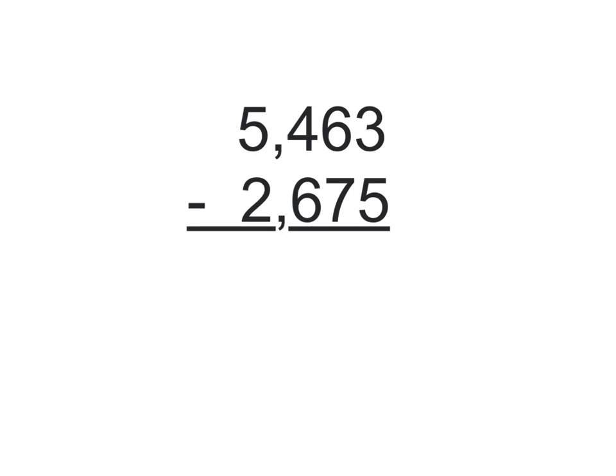So in this case, I know that I'm already going to need to ungroup from looking at my two numbers, and so I'm going to ungroup all at once just to get it out of the way. If I take my 5,000s, it's going to give me 4,1000s.